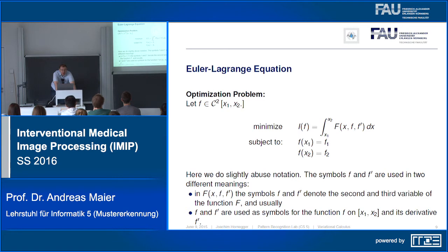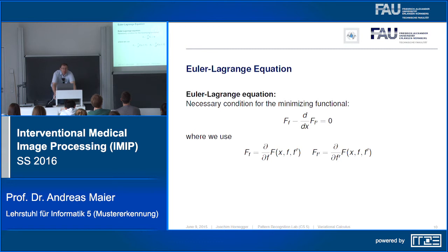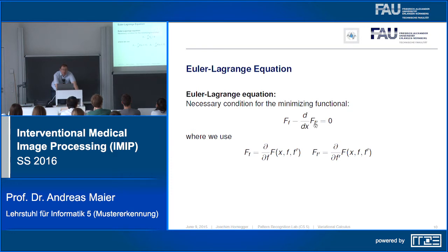We want to find a condition describing an optimal point for this functional. This is the Euler-Lagrange equation — the necessary condition for minimizing the functional. It takes the form: the partial derivative of F with respect to f, minus the total derivative with respect to x of the partial derivative of F with respect to f', equals zero.